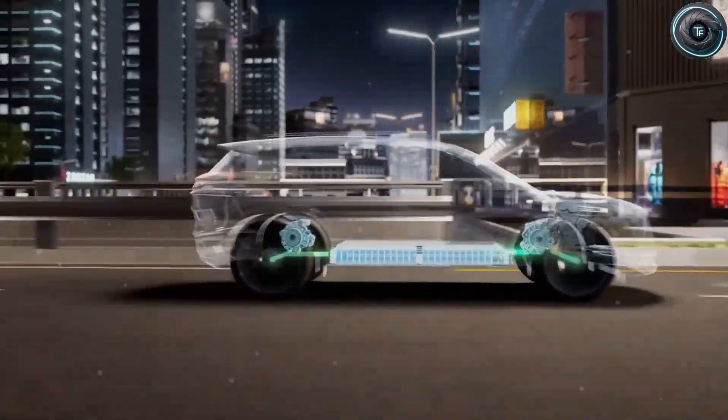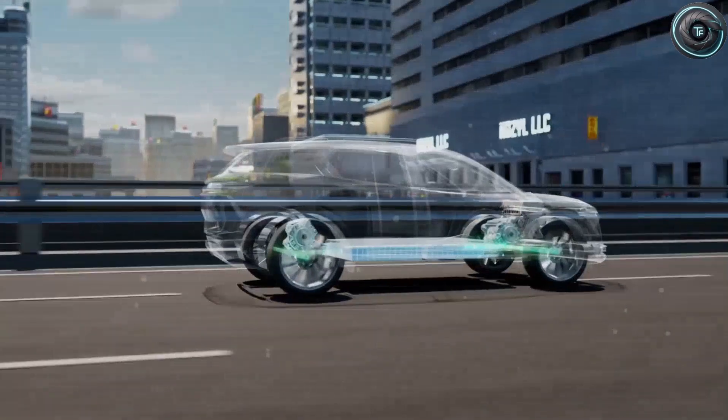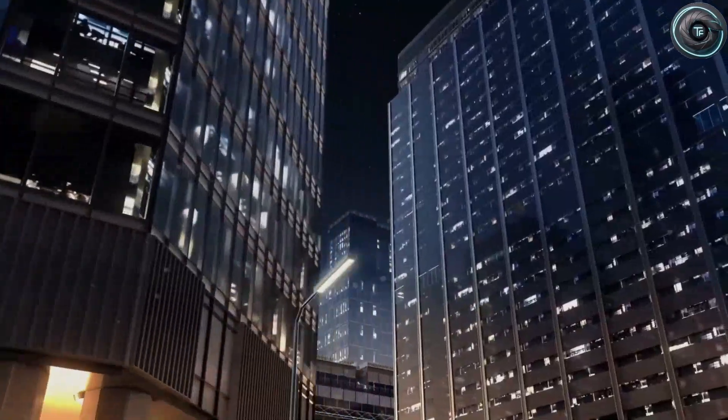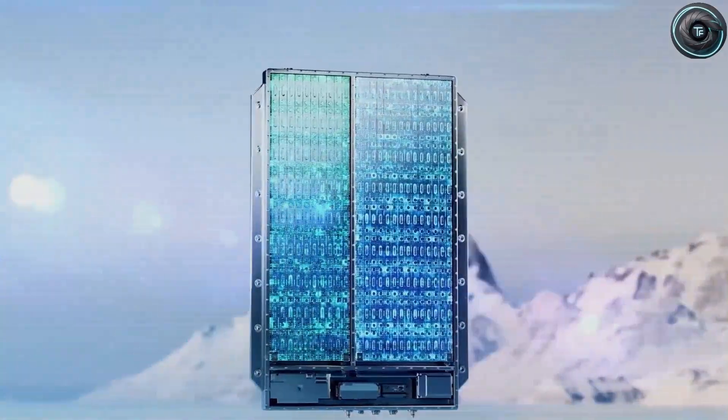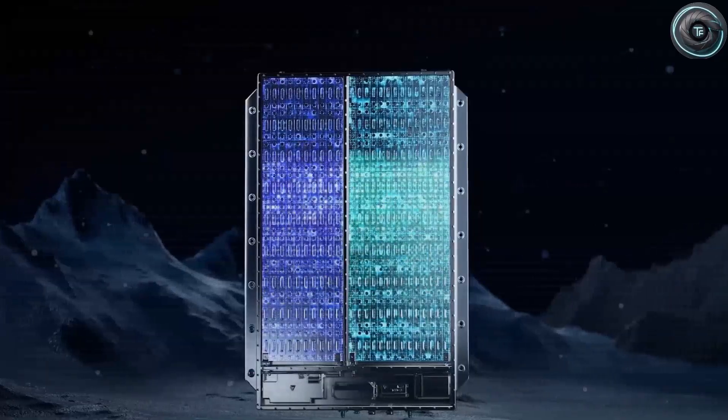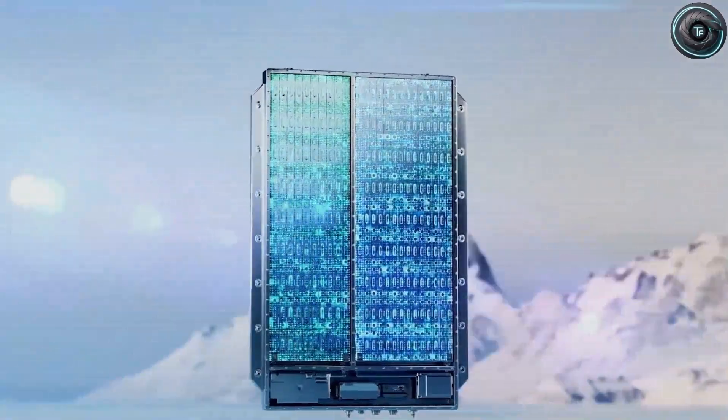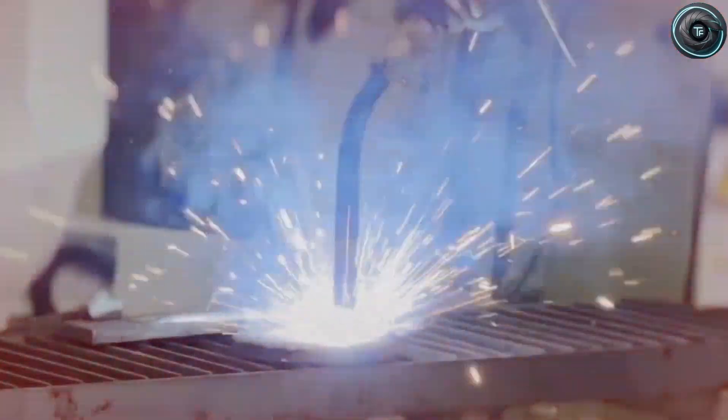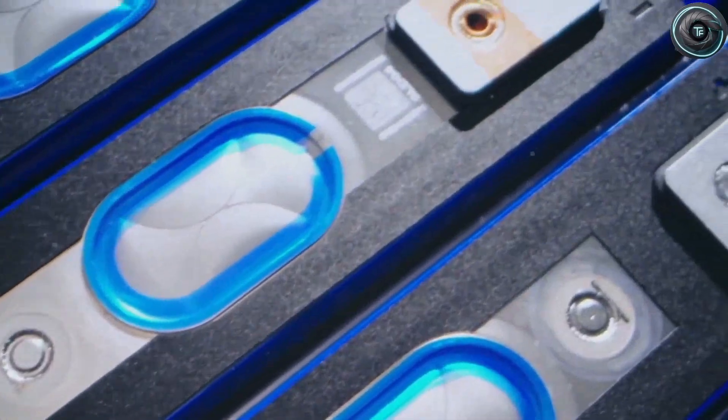This isn't science fiction anymore—it's the real-world result of years of relentless engineering. For Tesla, the aluminum-ion project also represents independence. Lithium supplies are dominated by a handful of countries, creating geopolitical risks and price volatility. Aluminum, on the other hand, is one of the most abundant elements on Earth. It's cheaper, easier to recycle, and already part of the global supply chain. Switching to aluminum batteries could cut production costs dramatically while making electric vehicles more affordable for everyone.